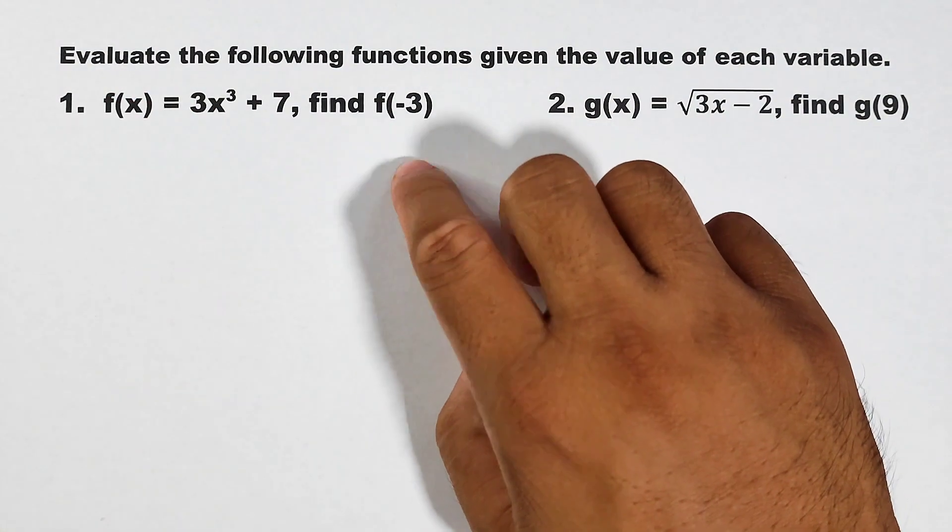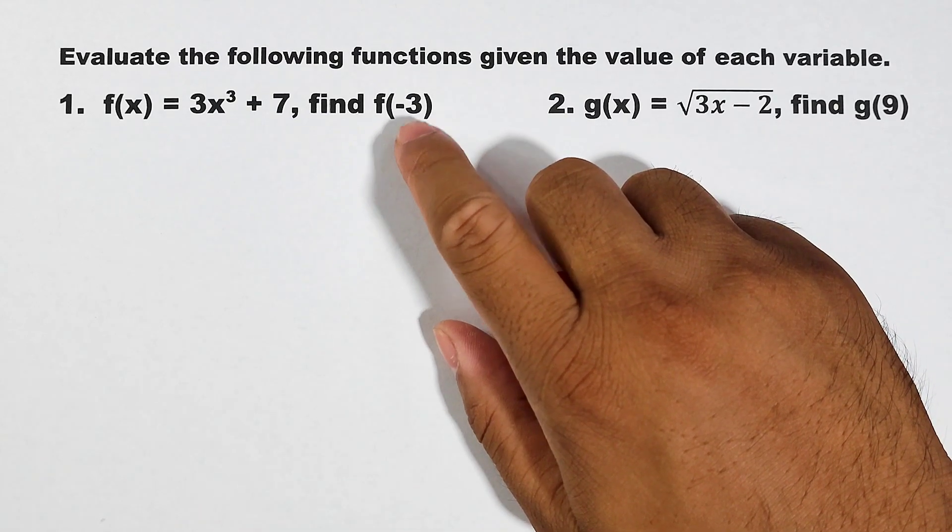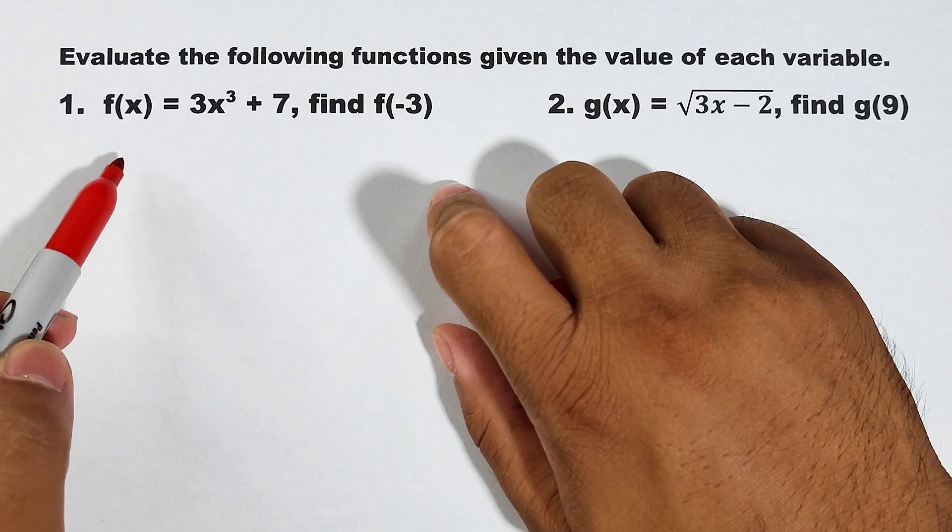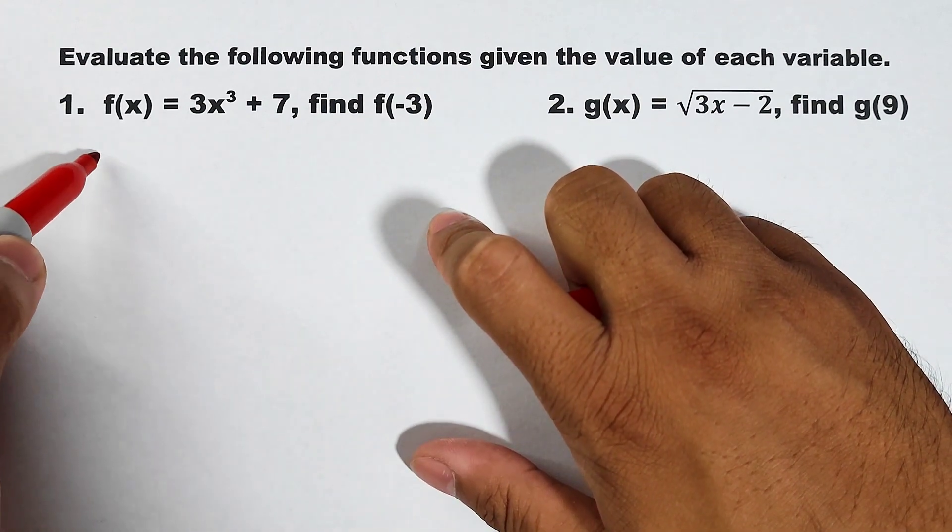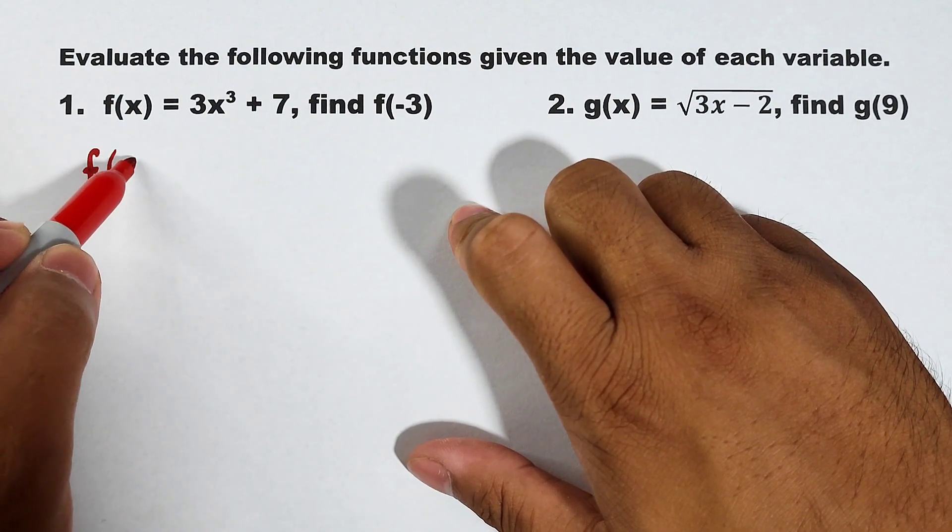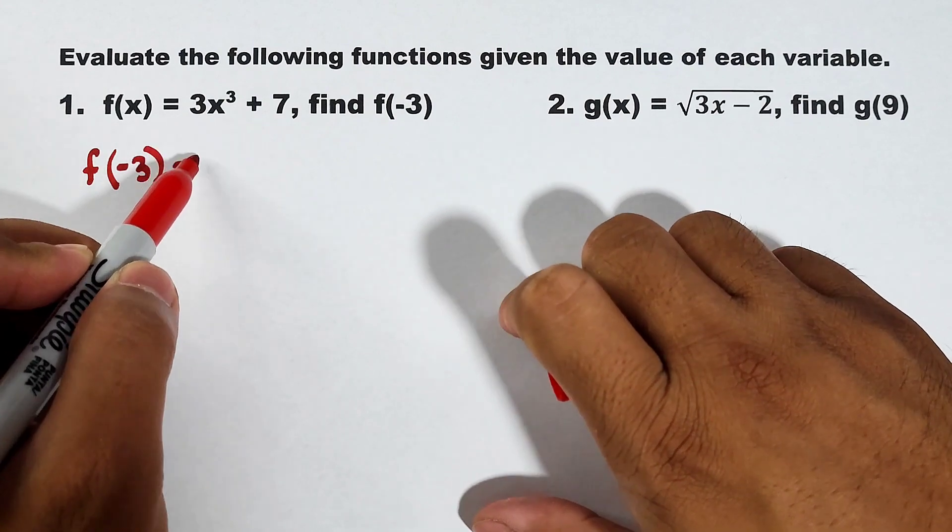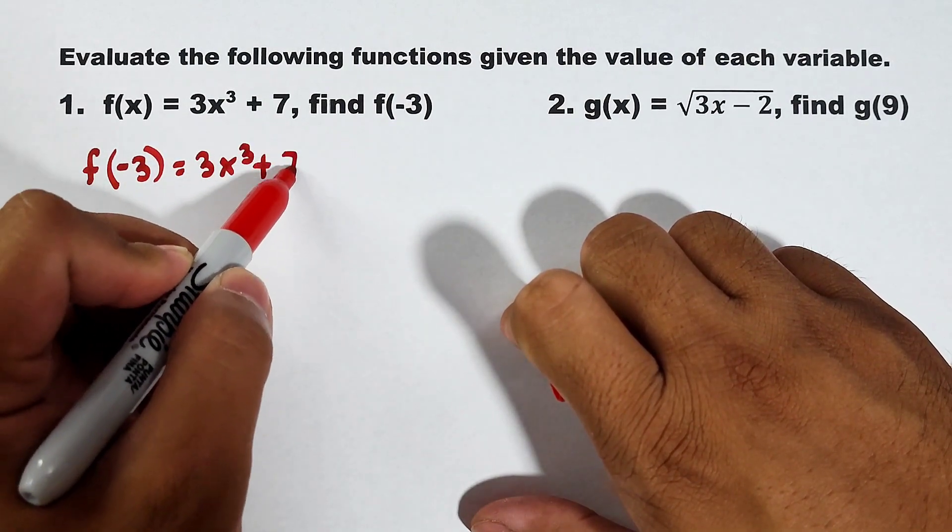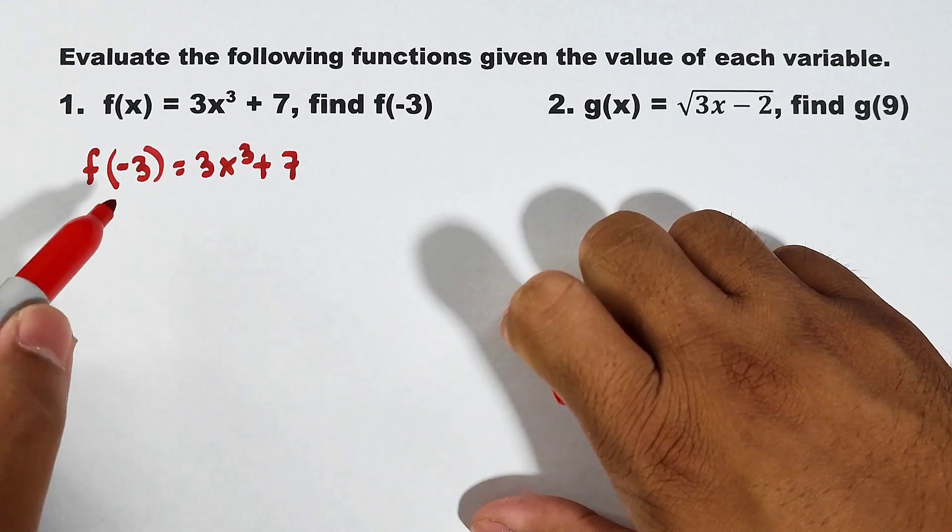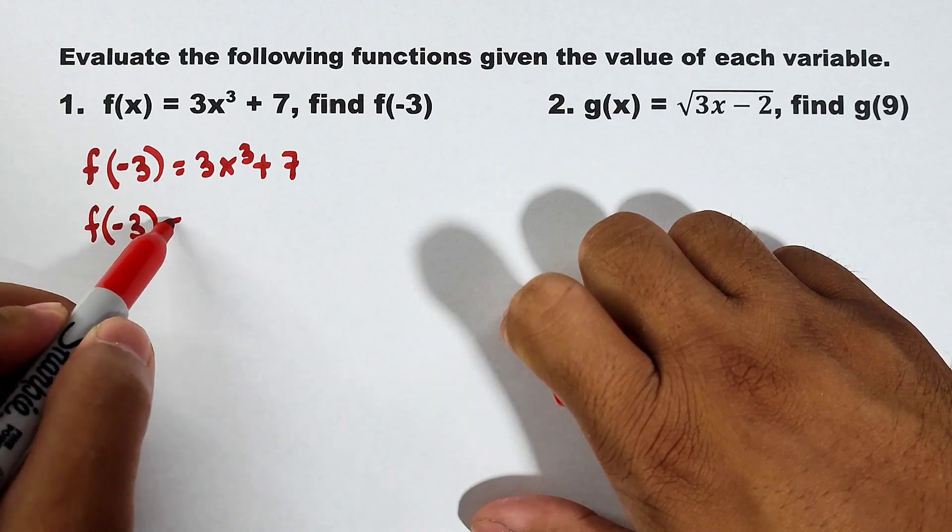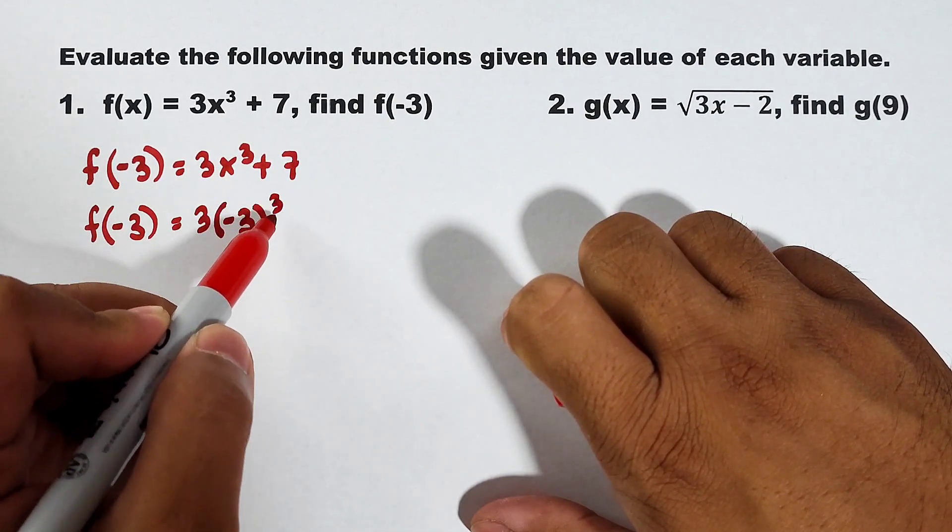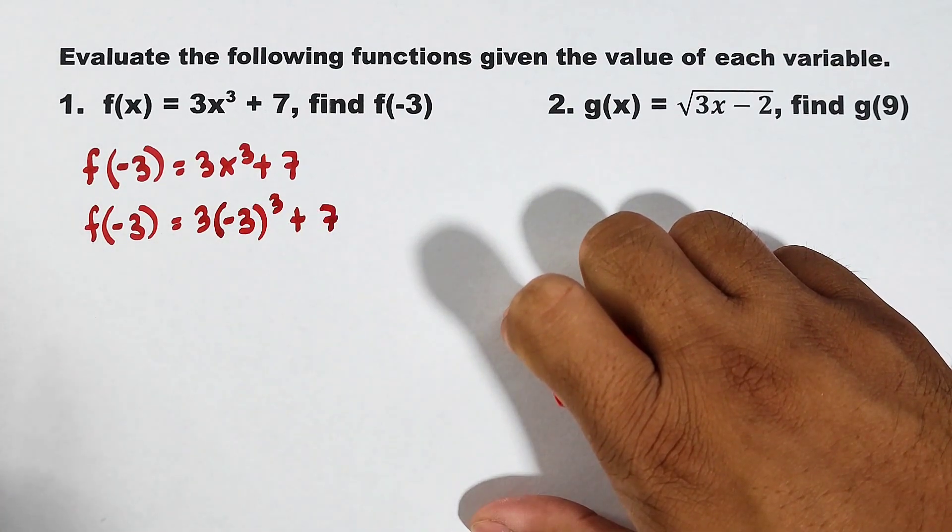So what are we going to do in this f of negative 3? This negative 3 inside the parentheses is the designated value for the variable x. This will be used to evaluate this given function f. So how are we going to do that? Let's start. We have here f of x. You will replace x by negative 3. It will become f of negative 3 is equal to copy 3x cubed plus 7. After that, you will replace this x by negative 3. Since this is your input, it will become f of negative 3 is equal to 3 times your x to become negative 3. Negative 3 raised to the third power plus 7.